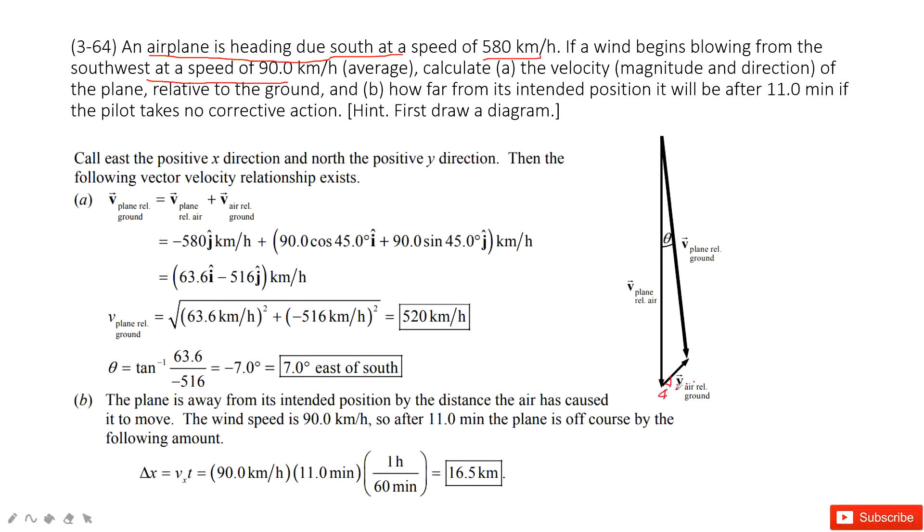And then the next one asks you to find the velocity of the airplane to the ground. So this is easy to understand. The velocity airplane to ground should equal velocity airplane to air plus velocity air to ground. Do you agree? Yes. So this one is the relative velocity equation.